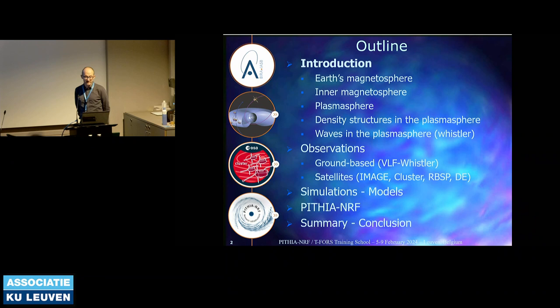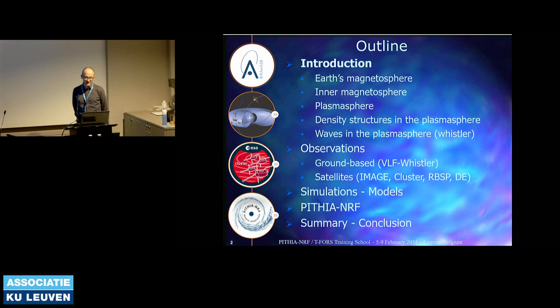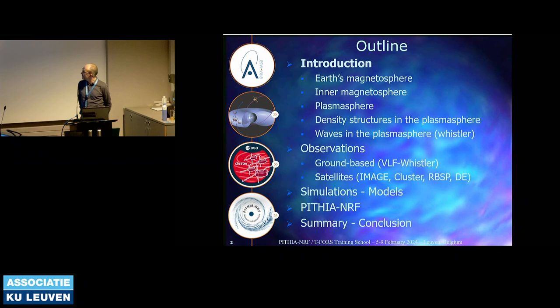Then I will speak more precisely about the plasmasphere and its density structures and the waves that occurred and are observed in the plasmasphere. In particular, the Whistler waves, which are very important and can be used to have information about the plasmasphere. This will be the second part of my presentation with observations of the plasmasphere divided in two parts: first with ground-based instruments and then with instruments on board satellites. I will present data from four different missions, then some simulations and models about the plasmasphere, and a link of those datasets and models with the PTIA-NRF project.